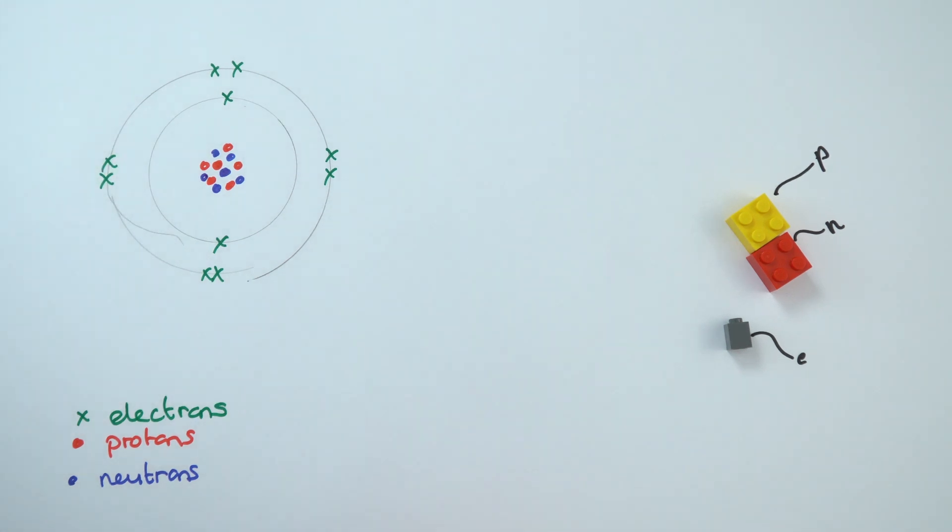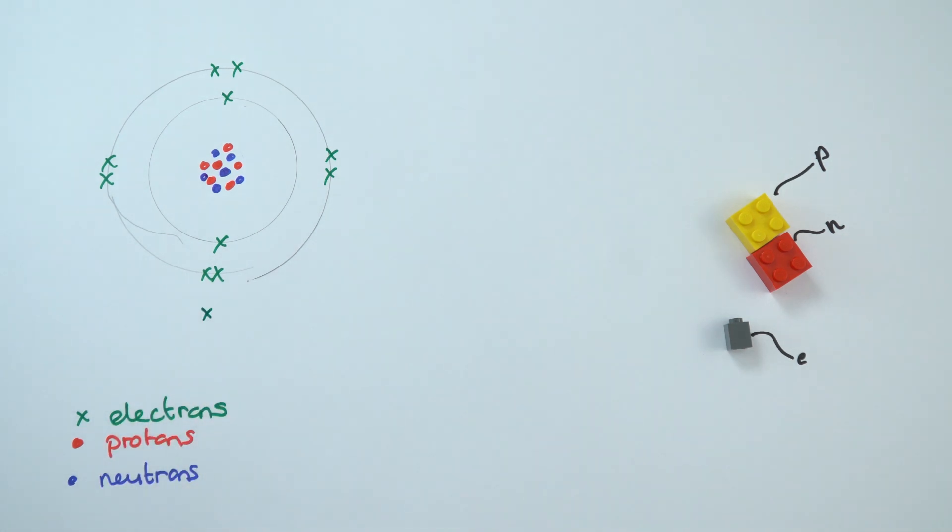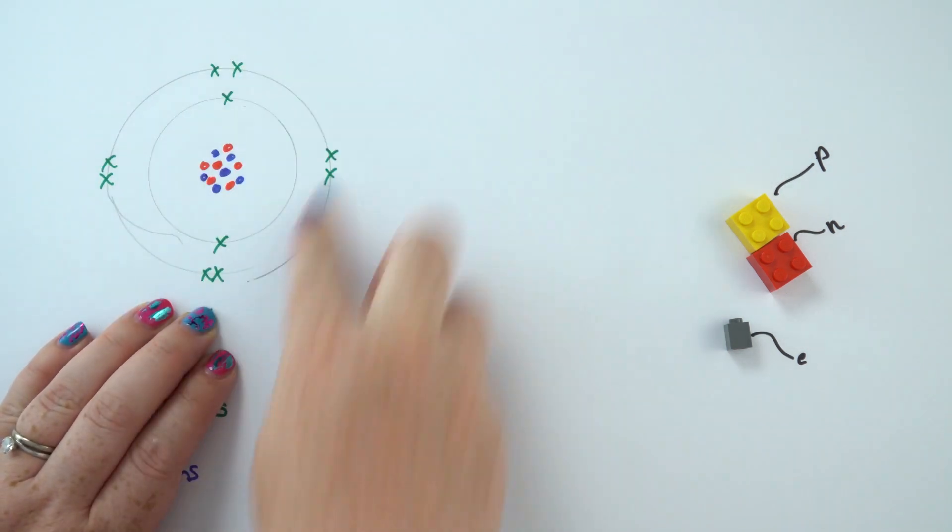Or if it's a group one element and it only has one electron on its outer shell, if I just draw a third shell in there, it will try and lose that electron so that it drops down and has this as the full outer shell.